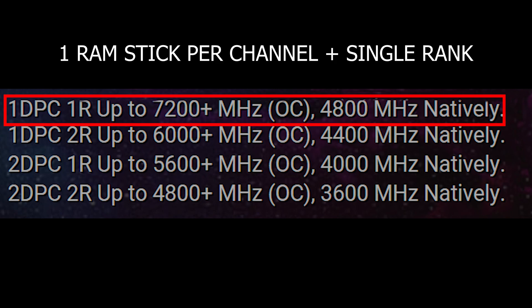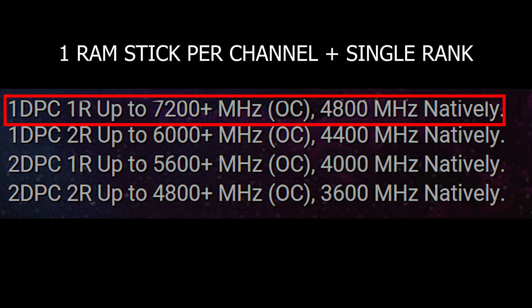This setup can support up to 7200 MHz. On the other hand, the slowest configuration would be having all four slots filled with dual ranked sticks, which supports up to 4800 MHz even with overclocking.